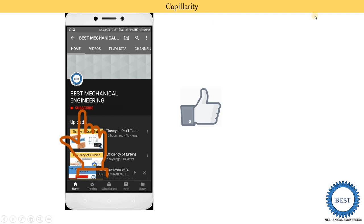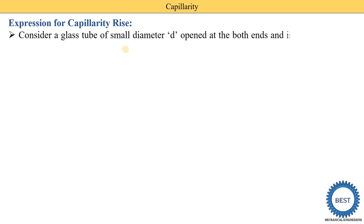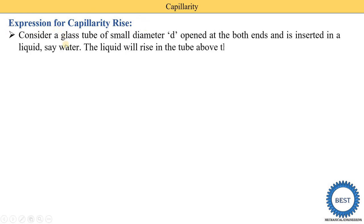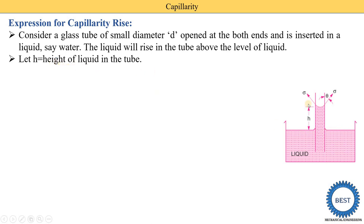Now we derive the expression for capillary rise. We consider a glass tube of small diameter d, open at both ends. This is the liquid level; the glass tube is inserted in a liquid — here we use water. The liquid will rise in the tube above the general liquid level. Let h be the height of the liquid in the tube. Under the state of equilibrium, everything is balanced.